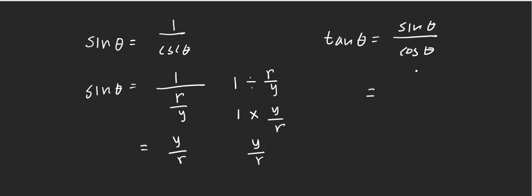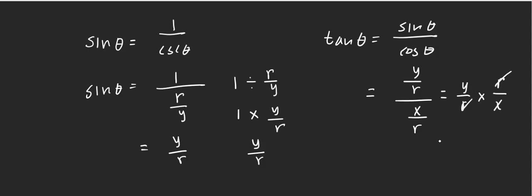What about tangent theta equals sine theta over cosine theta? Sine theta is y over r, and cosine theta is x over r. When you divide, you get y over r times r over x. The r cancels out, and you get y over x, which is the definition of tangent theta. That's why tangent theta is sine theta over cosine theta. You can use this method to prove other identities.